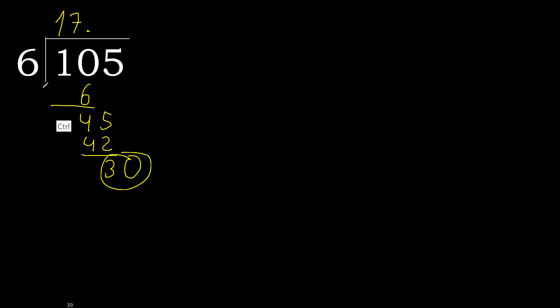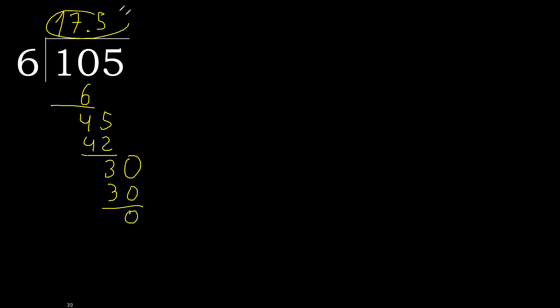30. 6 multiplied by 5 is 30 — 30 is not greater. So 30 minus 30 is 0. Therefore finished. 105 divided by 6 is 17.5.